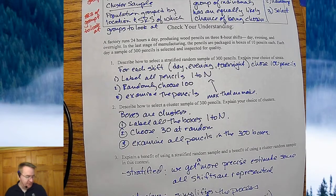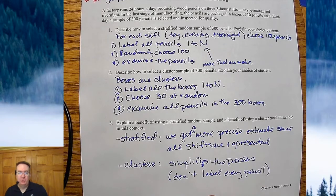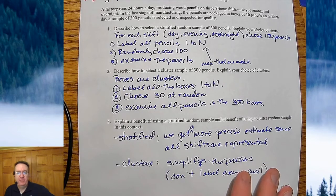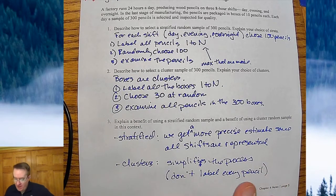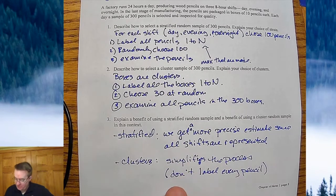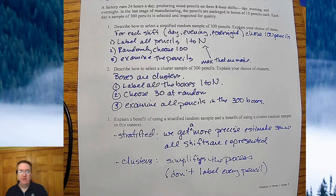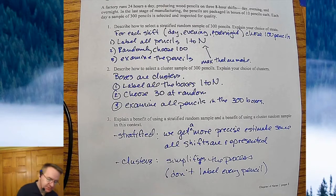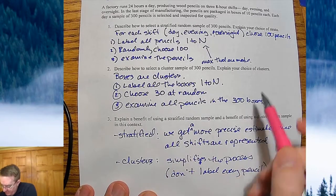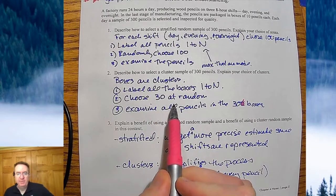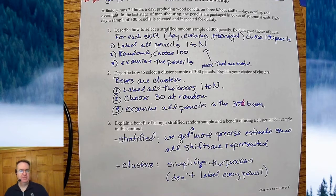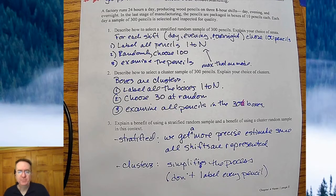Now the drawback to each of these is that the stratified, you get a lot more precise estimate because you're making sure all the shifts are represented. There's nothing worse than being said that everybody's doing a lousy job when you're not doing a lousy job. So stratified would make sure that everybody gets represented in that one. Clusters just makes it so much simpler. Can you imagine having to go through and find, you know, pencil number 3,973, or probably millions at this point, and then pull it out of the box, inspect it, and put it back? I would even just think trying to find 30 boxes out of all the ones that are being made would just seem to be kind of crazy. But we're just putting it in context. We're not saying which one's best at this point. So hopefully that helps.